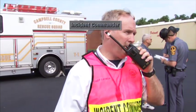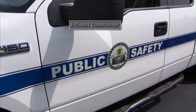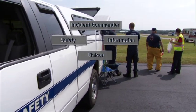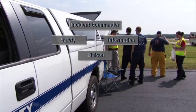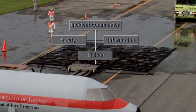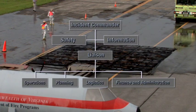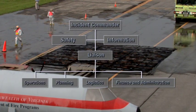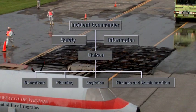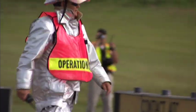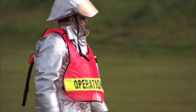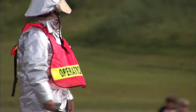The Incident Commander is its leader. The Command Staff includes information, liaison, and safety modules. The General Staff modules are Operations, Planning and Intelligence, Logistics, and Finance and Administration. Personnel in charge of each ICS module should wear a vest indicating their area of responsibility.